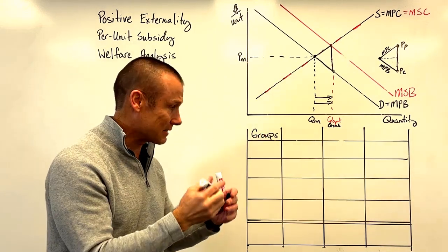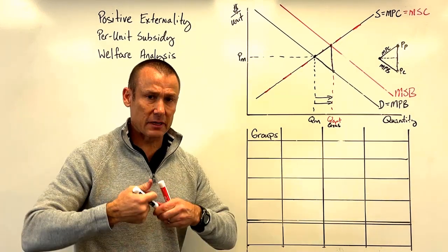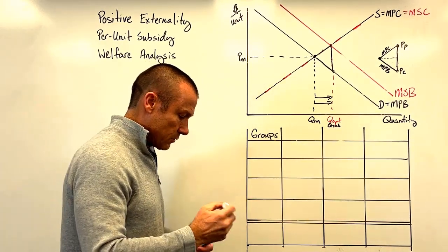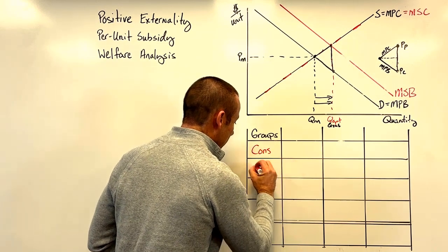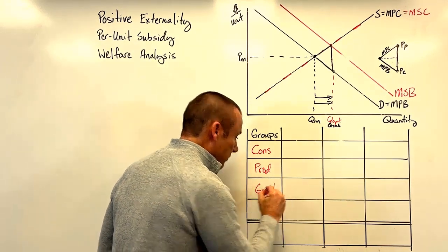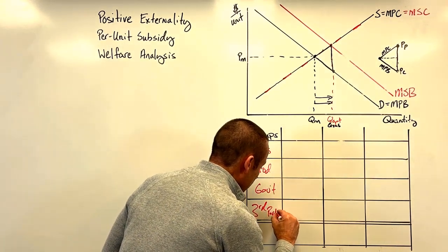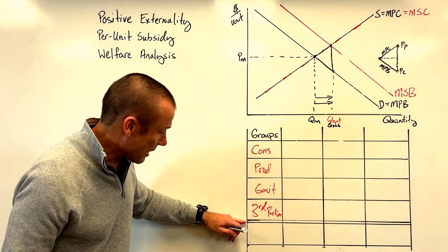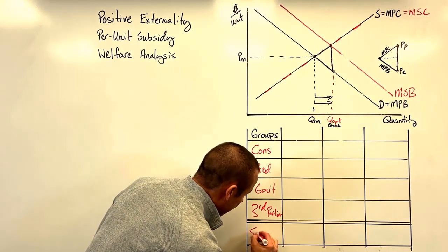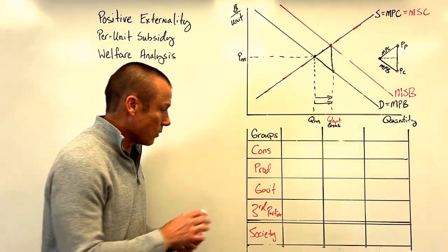Now for the welfare table. We're going to have almost the maximum number of groups for a welfare analysis in a micro class. We have consumers, producers — our market participants — the government, because there's a government outlay, and third parties because we have an externality. The double line means the bottom row is the sum of everything above — that's our society, which is everybody. Never get confused: third party is not society; society is everybody.